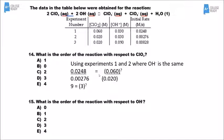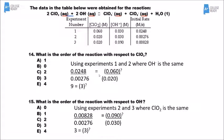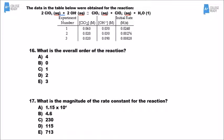For number 15, we do the same thing but pick spots where OH⁻ changes and ClO₂ stays the same — experiments 2 and 3. Comparing the rate to the [OH⁻] concentrations, we get 3 equals 3 to some unknown exponent, so the exponent for hydroxide is 1. The correct answer is B. Since it's second order with respect to ClO₂ and first order with respect to OH⁻, the overall order is 2 plus 1 equals 3.